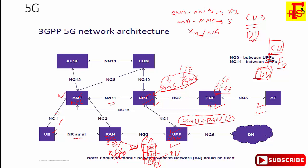The UDM is the Unified Data Management. In LTE it was called HSS, and now it is replaced by the UDM. UDM performs part of the 4G HSS functions — whatever HSS functions existed in LTE, UDM now handles those things. This includes generation of authentication and key agreement (AKA), user identification, access authorization, and subscription management.